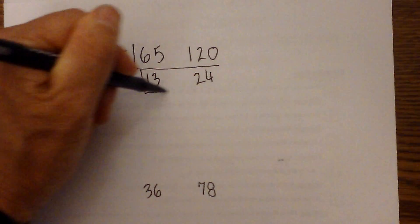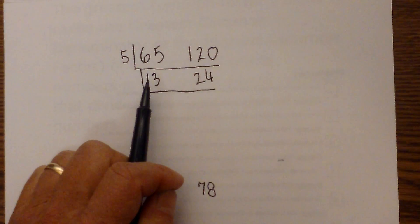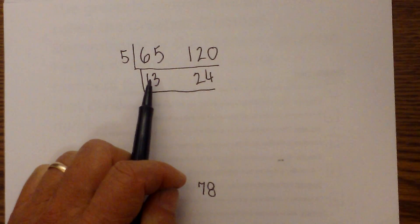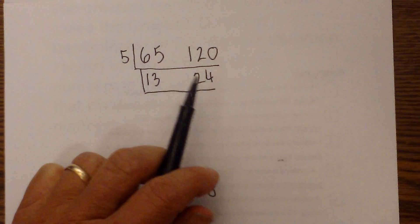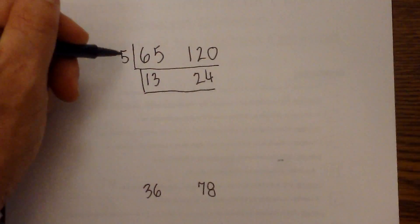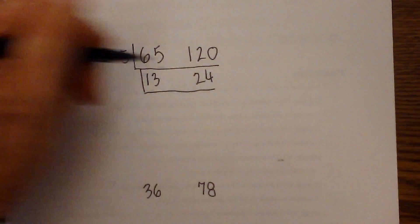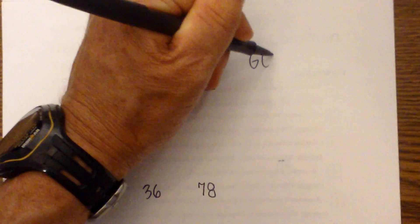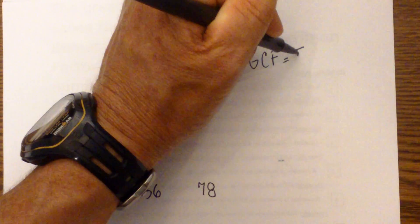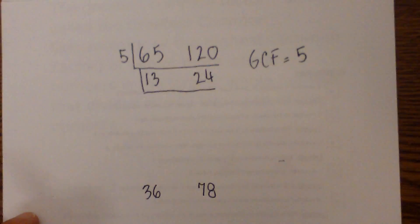I will draw a line underneath. And now at this time, there is not a number that will go into both 13 and 24. So the greatest common factor of 65 and 20 is GCF equals 5.